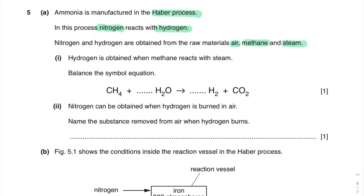Hydrogen is obtained when methane reacts with steam. The first step is to balance the equation. You can see over here you've only got one oxygen but you've got two over here, so I'm going to try balancing my oxygens. That gives me four hydrogens here and two times two hydrogens here — two times two is four plus another four is eight. Therefore I need eight on this side. If I do four, I've got four times two which also equals eight. Therefore it's balanced.